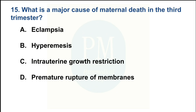What is a major cause of maternal death in the third trimester? Option A — Eclampsia; Option B — Hyperemesis; Option C — Intrauterine growth restriction; Option D — Premature rupture of membranes. The correct option is Option A: Eclampsia.